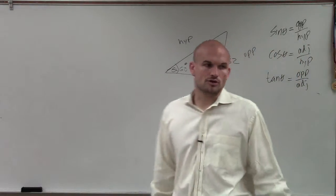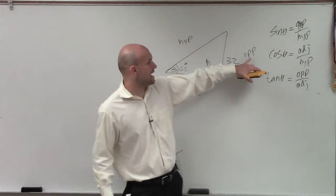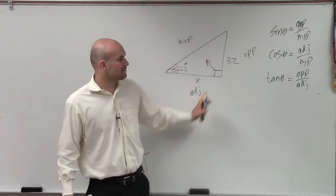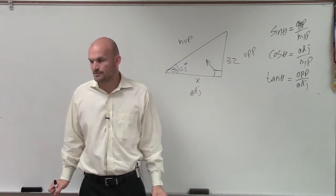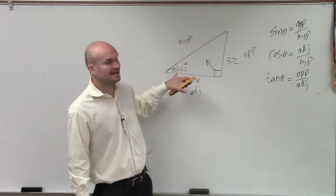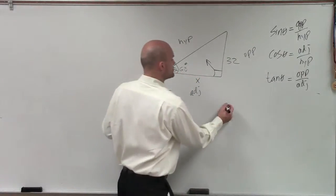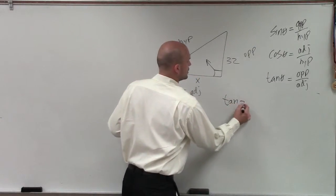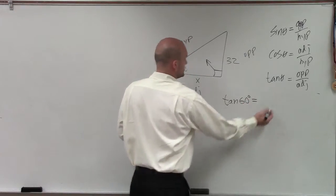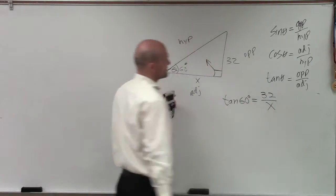Looking at what information we have — we have information for the opposite and the adjacent — so therefore, which trig function are we going to want to use? Tangent. And do we know what theta is? Yes, 60 degrees. So I'll write: tangent of 60 degrees is equal to 32 over x.